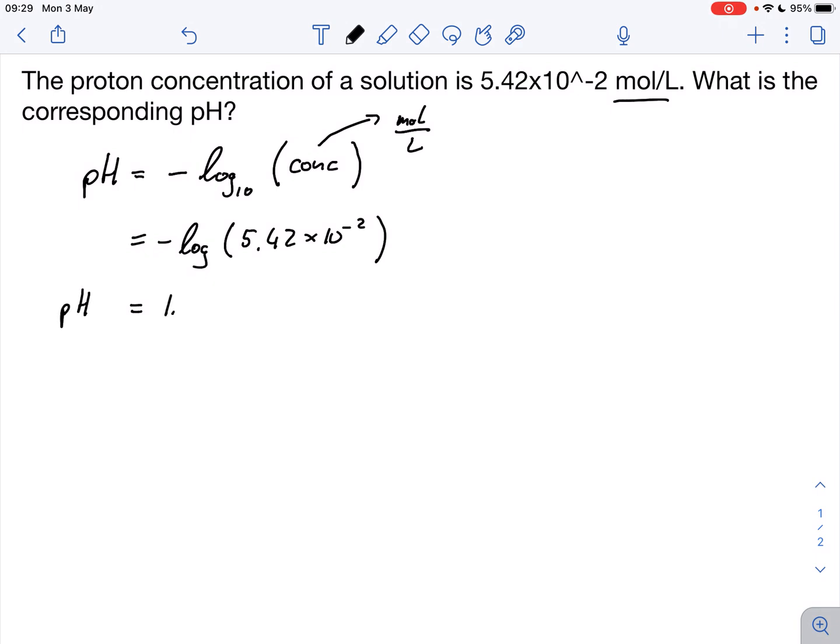the solution 1.266... and because we've got only two decimal points here, we round this to the same number of decimal points, so the pH would be 1.27 for this particular solution.